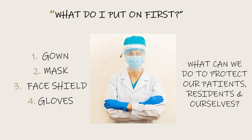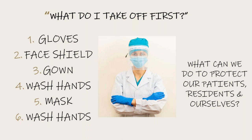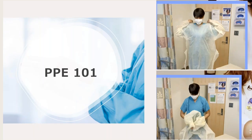What do you put on first? Gown, mask, face shield, then gloves. What do you take off first? Gloves first — they are the dirtiest — then face shield, then gown, wash your hands, then remove the mask, and wash your hands again. When removing gloves, put one finger inside the glove and wrap them together. When removing your gown, roll it away from your body.